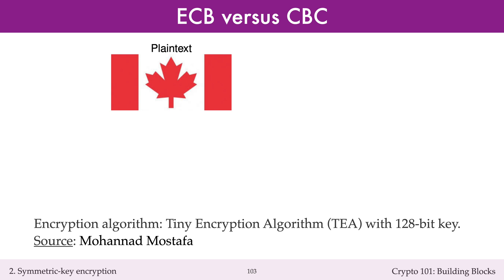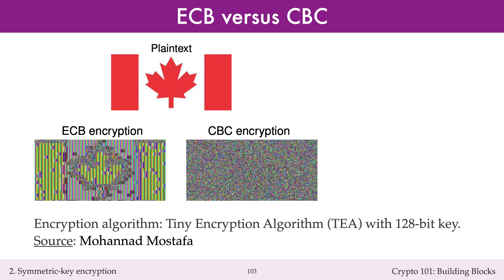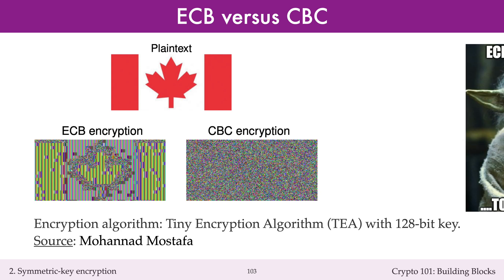Here is a nice example that illustrates why CBC encryption is superior to ECB encryption. The plaintext is an image which is converted to a binary message. One would expect that blocks corresponding to portions of the image of the same color are similar to each other, and different from blocks corresponding to portions of a different color. The ECB ciphertext shown as an image actually reveals the plaintext image, whereas the CBC ciphertext appears to be a random image. This shows that ECB encryption is especially bad for encrypting images — one can learn about the plaintext from the ciphertext simply by looking at it.